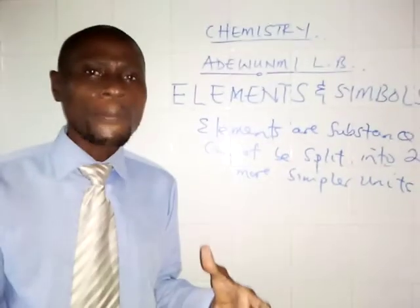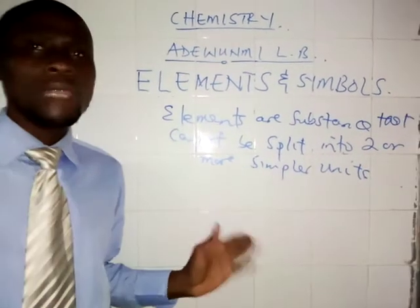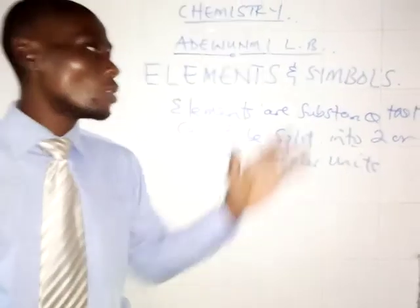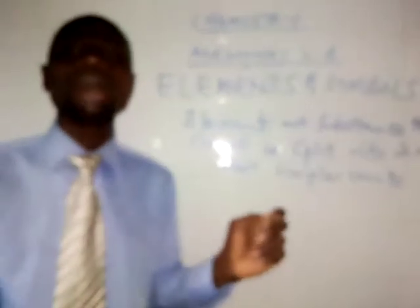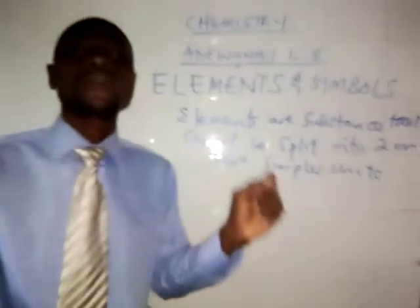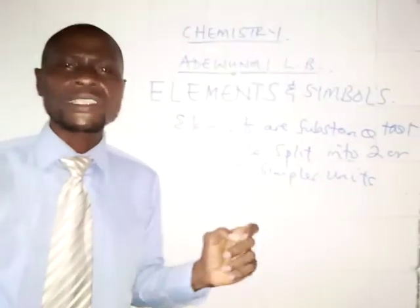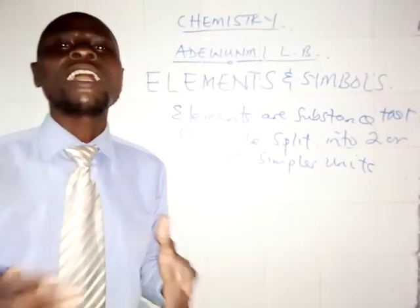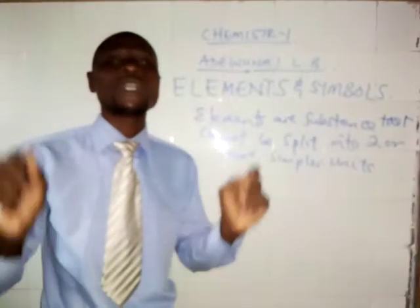Elements are present inside compounds. Now, having defined what an element is, let us look at elements and their respective symbols. A symbol is an abbreviation or representation of a particular element. For example, oxygen is represented by the symbol O, and hydrogen is represented by the symbol H.